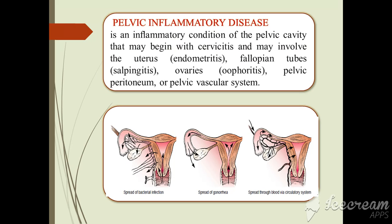Pelvic inflammatory disease is an inflammatory condition of the pelvic cavity that may begin with cervicitis and might involve the uterus (endometritis), fallopian tubes (salpingitis), ovaries, oophoritis, pelvic peritoneum, or pelvic vascular system.